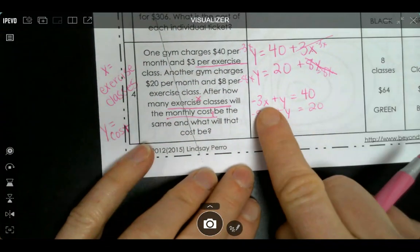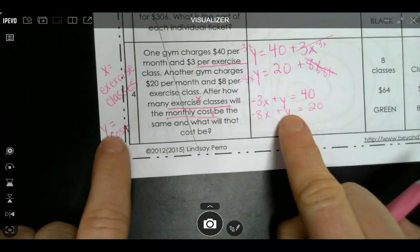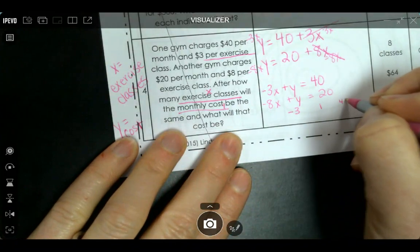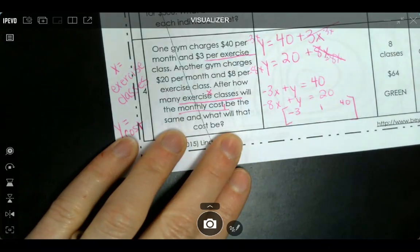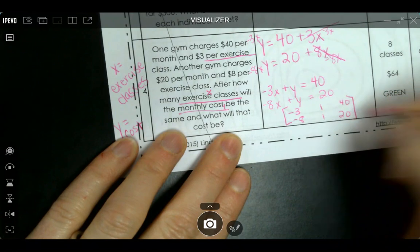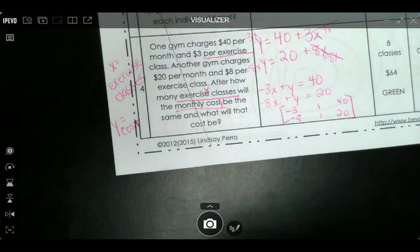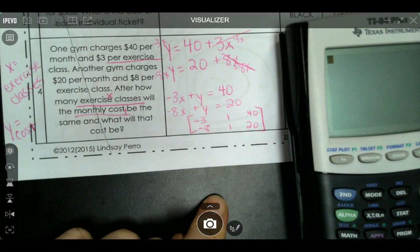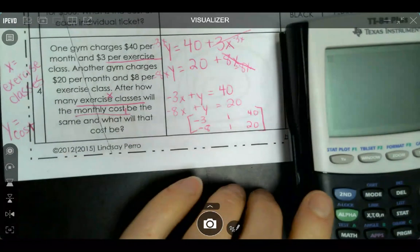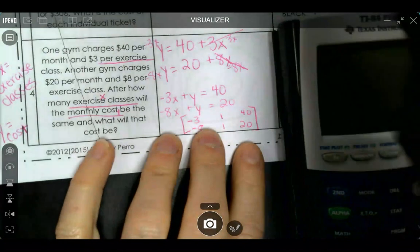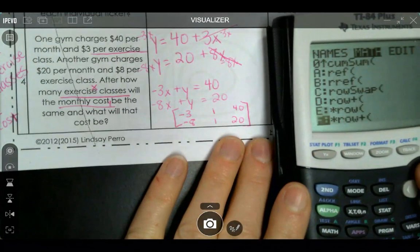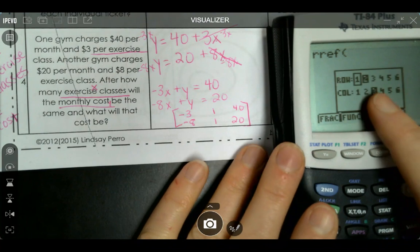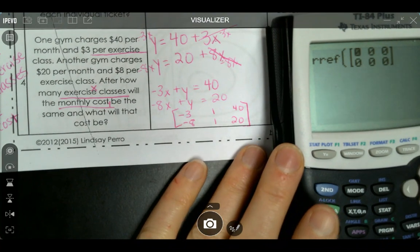We do that so we can do the matrix. Now it's in the right form. We want to find x, how many exercise classes, y equals the cost. So it's going to be -3x + y = 40 and -8x + y = 20. Set up your calculators so you can do the matrix. You're going to write your input matrix, then your output solution matrix. Also set up all the steps for the matrix: put in the RREF, put in the matrix, make sure it's a 2 by 3, and put in your numbers.